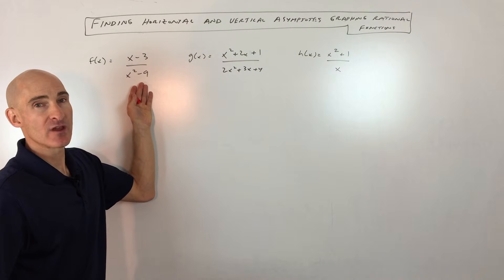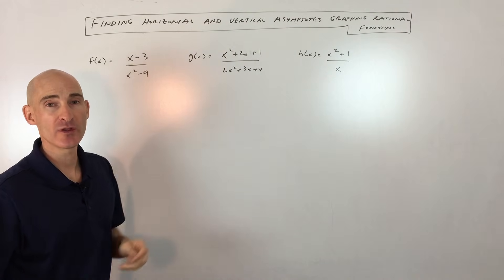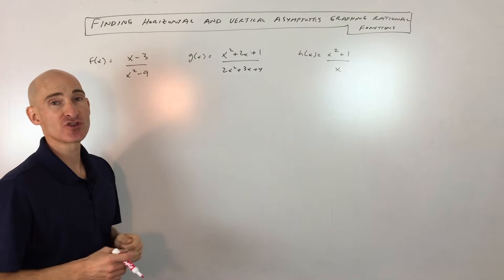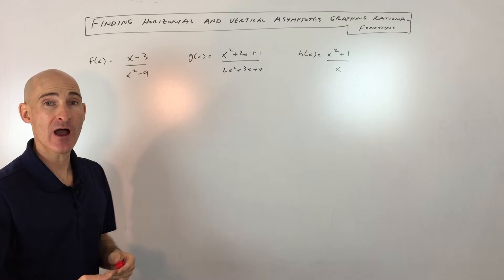The first thing we want to do is analyze the horizontal asymptote. The way you do that is you look at the highest degree term in the numerator and the highest degree term in the denominator and analyze their powers, their degrees.